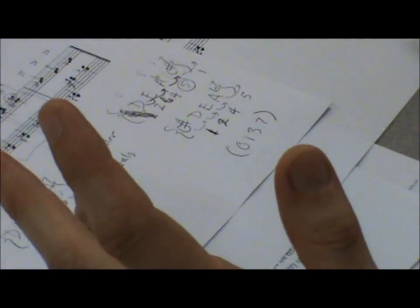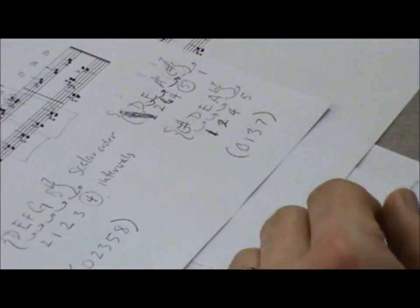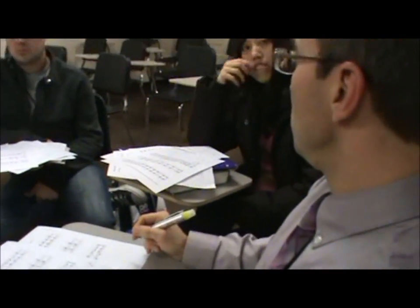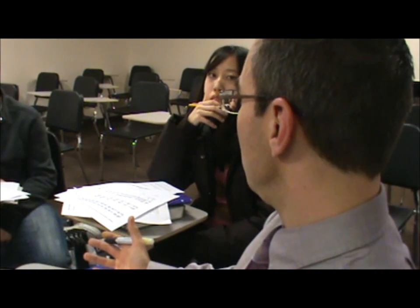Try this. In traditional interval counting, you have a perfect fifth plus a perfect fourth. Five and four make nine. Should make nine, but they make eight.